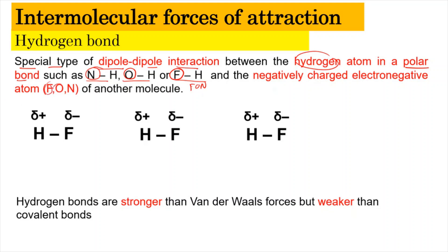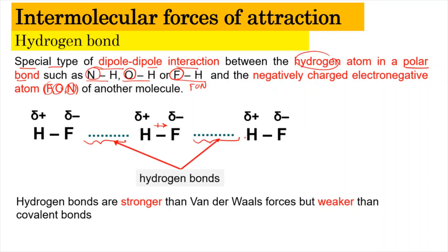For example, in the F-H bond (H-F), there is a partially positive charge on hydrogen and a partially negative charge on fluorine, making it a polar bond. The fluorine atom of one molecule can make an interaction or force of attraction with the hydrogen of another molecule, and these forces of attraction are known as hydrogen bonds.